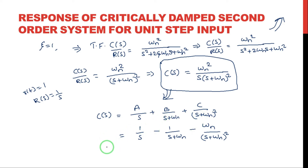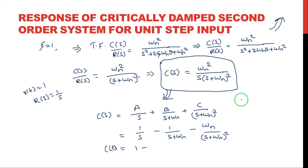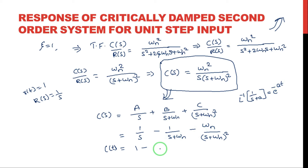Now applying the inverse Laplace transformation to this expression, we get c(t). The inverse Laplace of 1/s gives 1. The inverse Laplace of 1/(s+a) is e^(-at), so here with a equal to omega_n, we get e^(-omega_n * t).